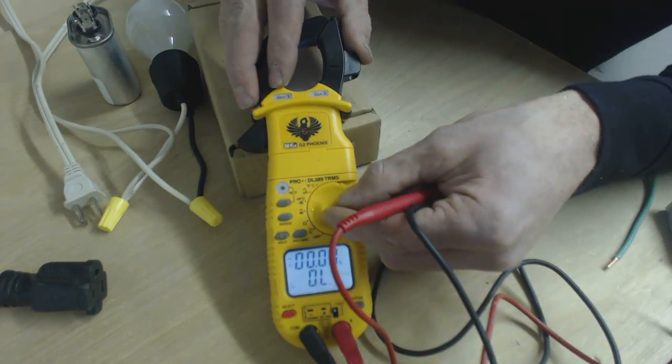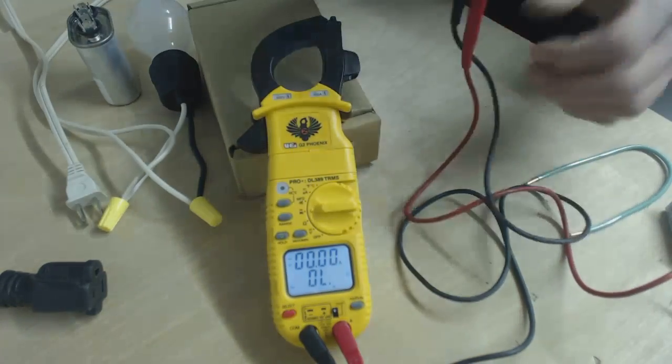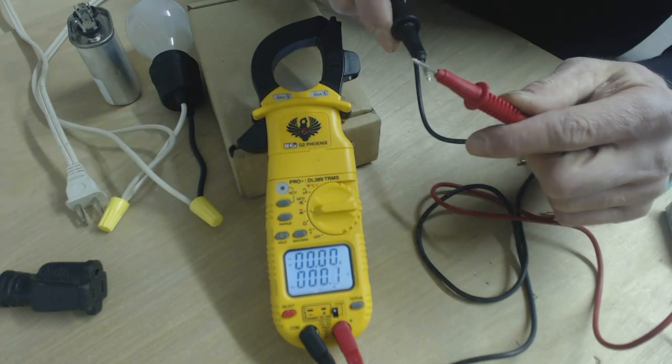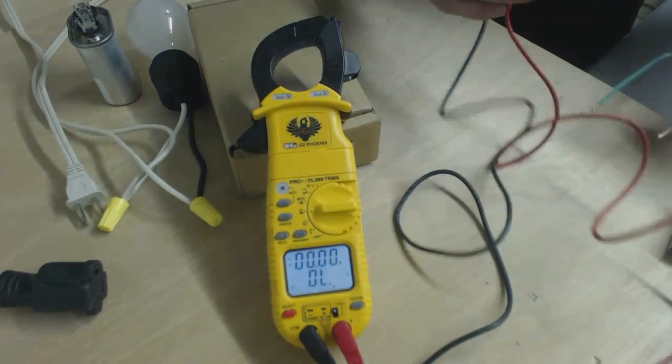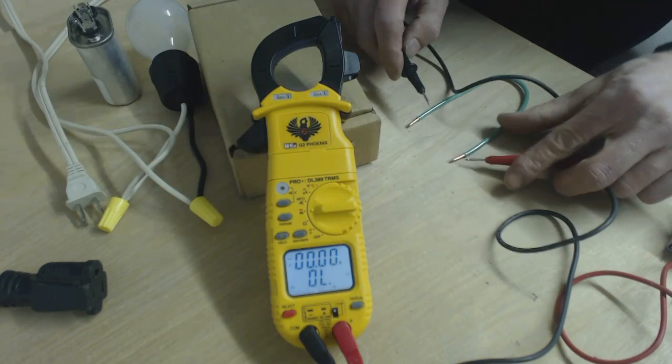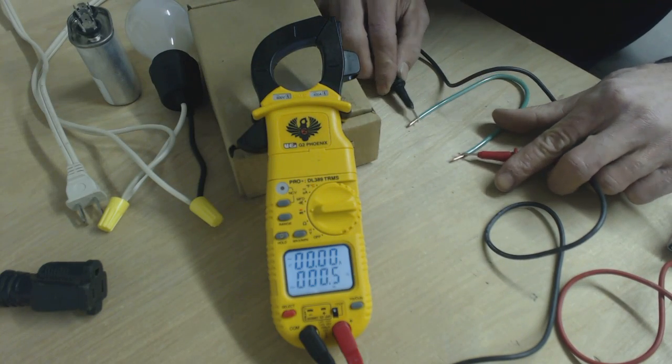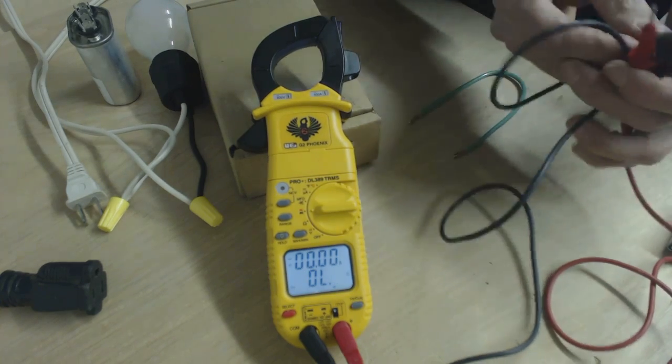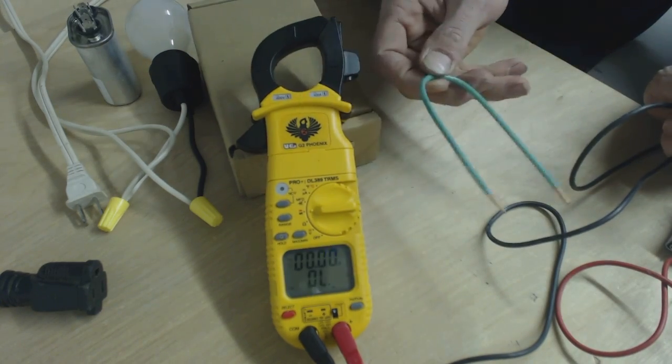Now we're going to go to continuity, which is the speaker button. If you were to put these two probes together like that, it would make that noise indicating that you have a closed electrical circuit. For resistance and continuity, you would want to disconnect your wiring first or your component first.